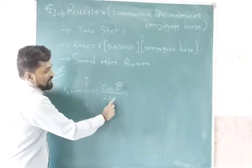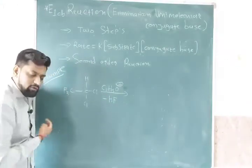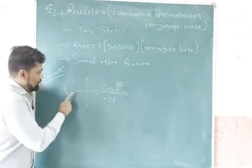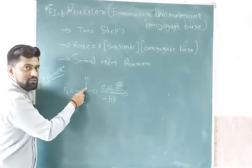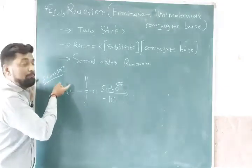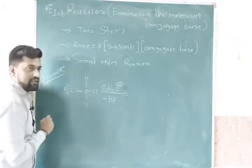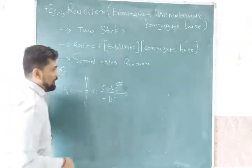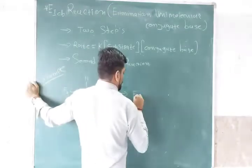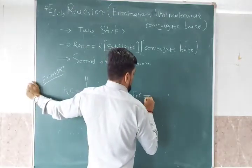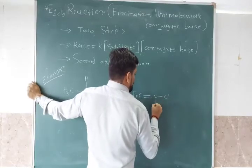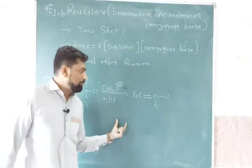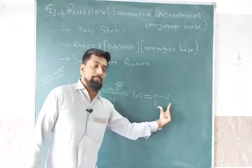So here we take the compound with hydrogen and halogen groups — fluorine, bromine, iodine, or whatever is there. Here two chlorines are present. With negative charge formation and F removal, a positive-negative bond forms, resulting in F2C=CCl2 product.